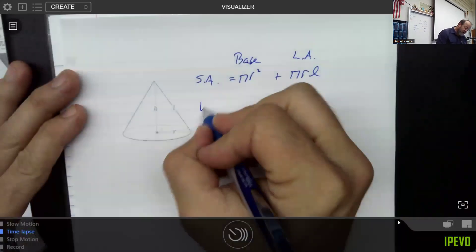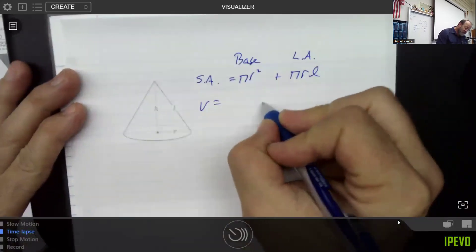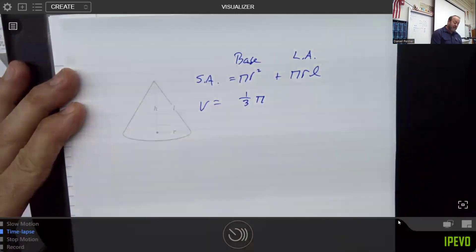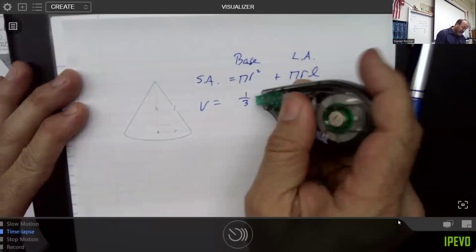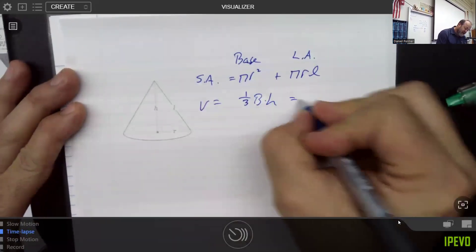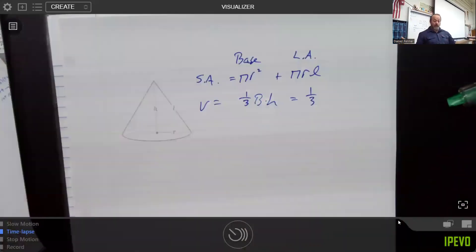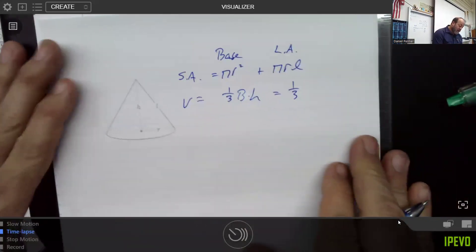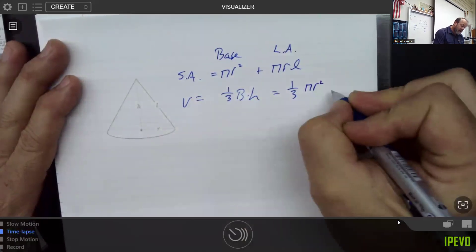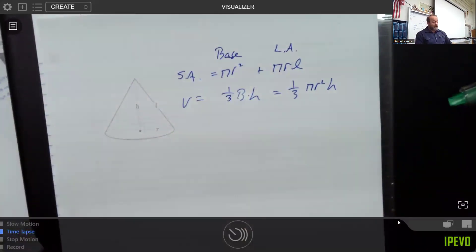And of course the volume kind of goes back to the idea of any kind of a pyramid based shape that it is one third the area of that base multiplied by the height, which is exactly what we used in the previous video. But remember the base is a circle, so it's one third pi r squared times H. Very simple little idea.